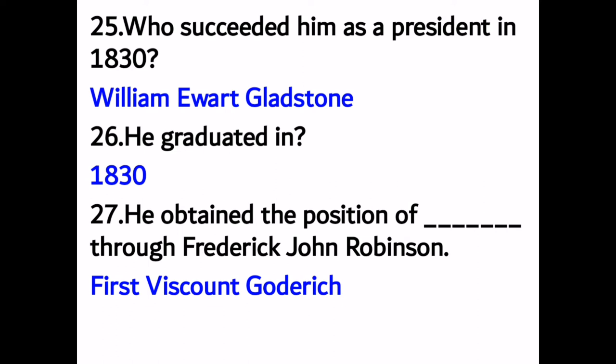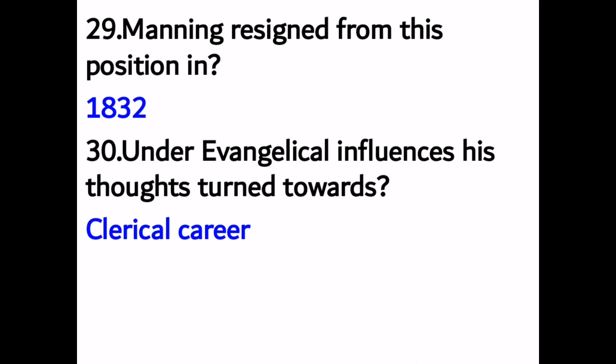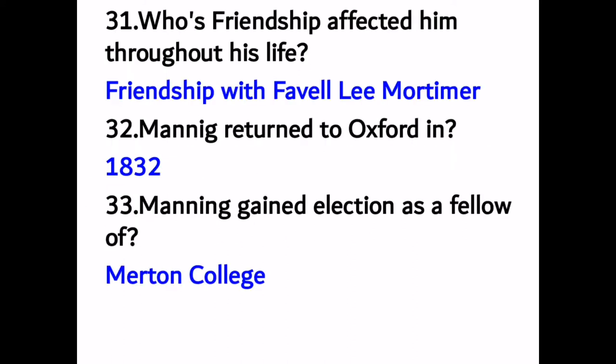Number twenty-seven: he obtained a position through Frederick John Robinson, First Viscount Goderich. Number twenty-nine: Manning resigned from this position in 1832. Number thirty: under evangelical influences his thoughts turned towards a clerical career.